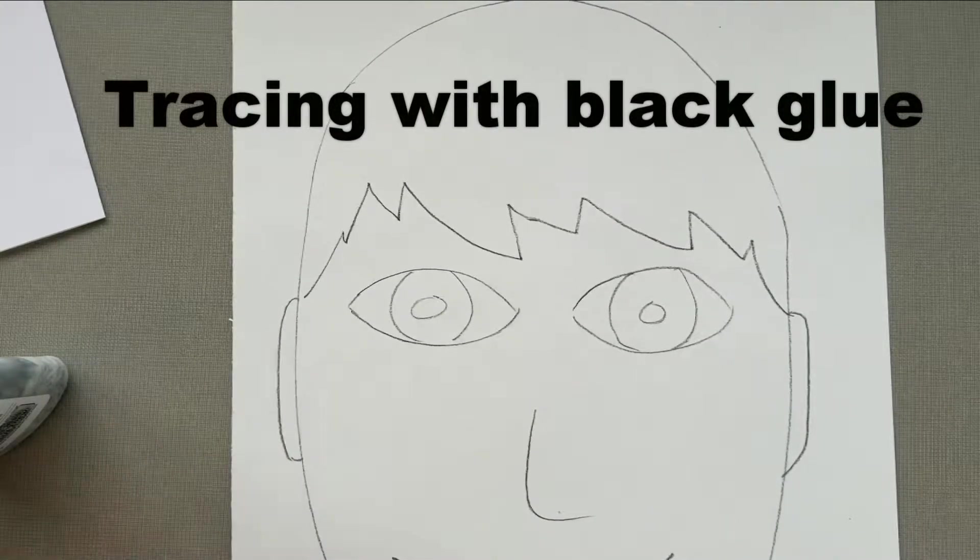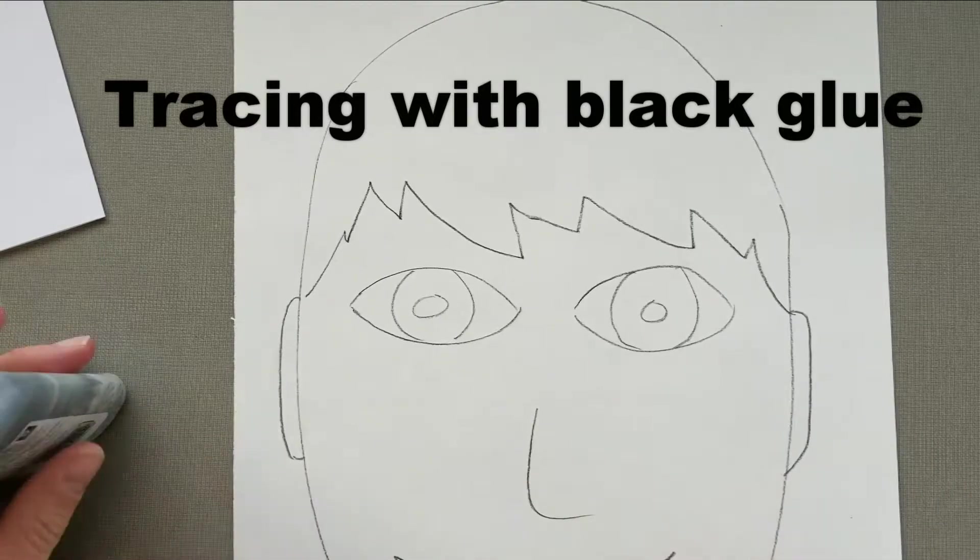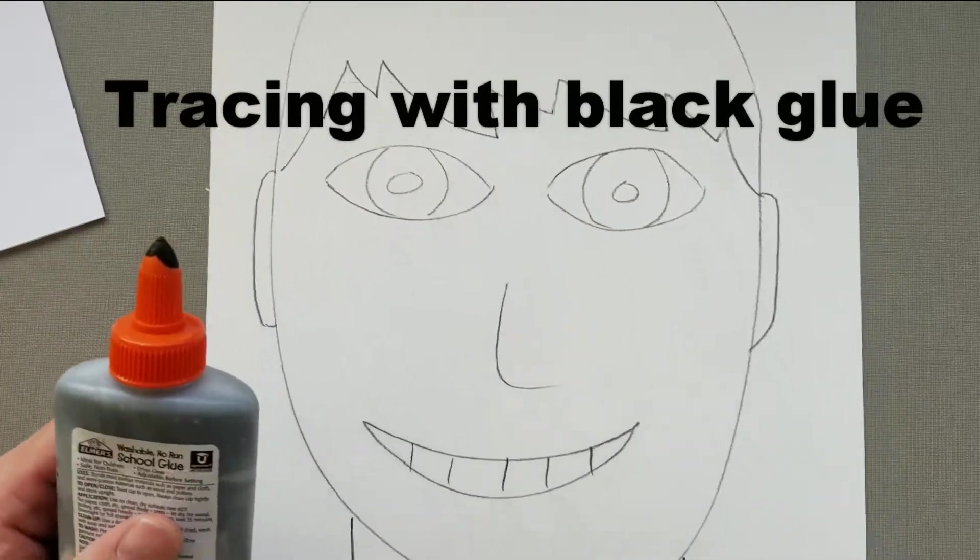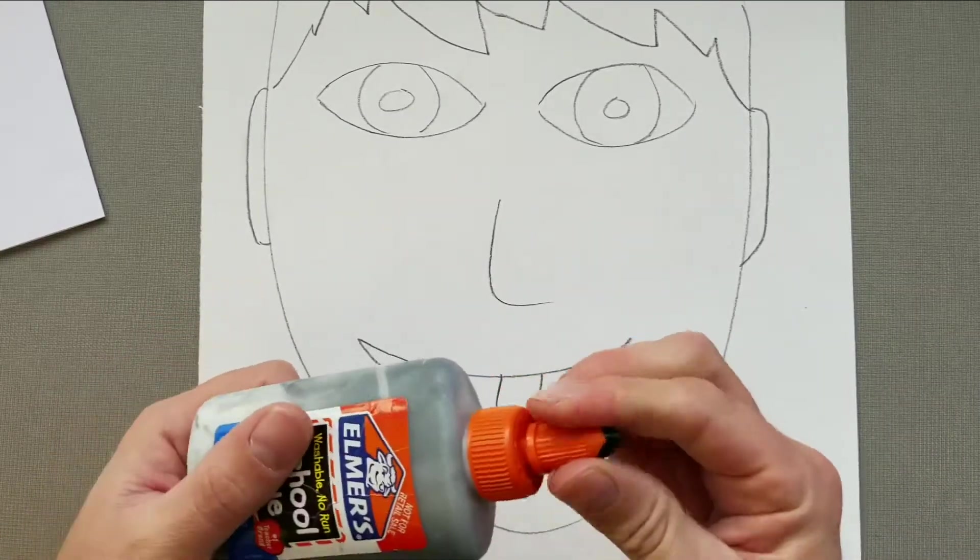Alright, so you've finished your self-portrait and you're ready to start tracing it with black glue. The first thing you need to know is how to open it - you twist the small cap first.